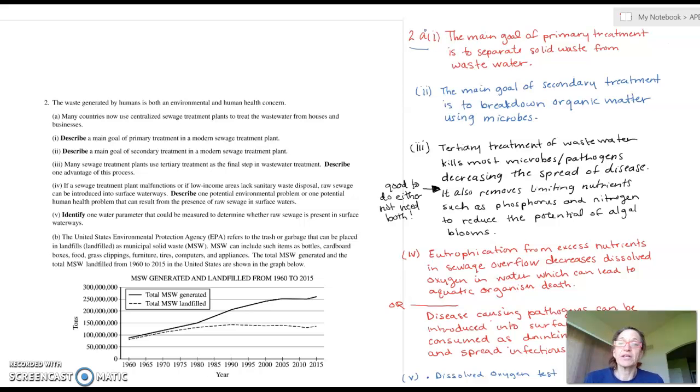Number three then asks: many sewage treatment plants use a tertiary treatment as a final step in wastewater treatment. Describe one advantage of this process. Tertiary treatment is typically where you kill the microbes or any pathogens or you remove any additional limiting nutrients such as phosphorus or nitrogen, so that water doesn't accidentally cause any other blooms. Realize this is only asking for one advantage. You could say tertiary treatment of wastewater kills most microbes or pathogens, decreasing the spread of disease. Or you could also say tertiary treatment of wastewater removes limiting nutrients such as phosphorus and nitrogen to reduce the potential of algal blooms.